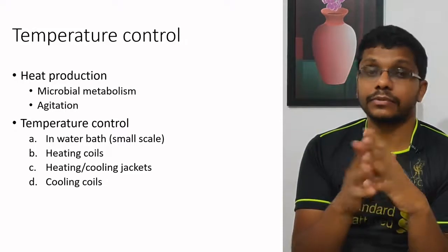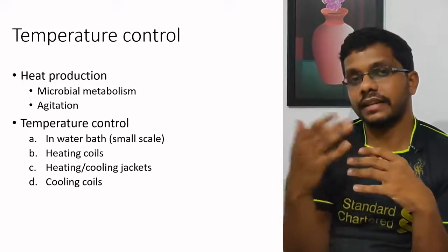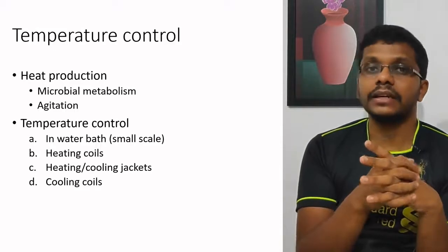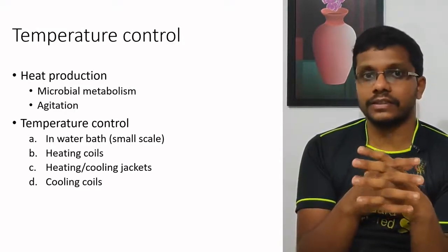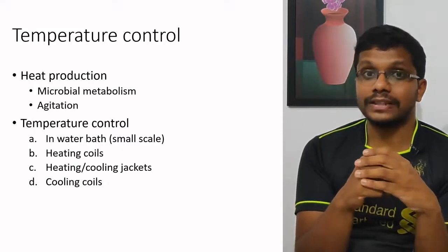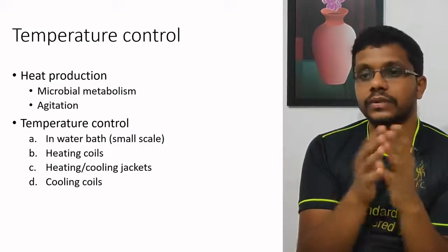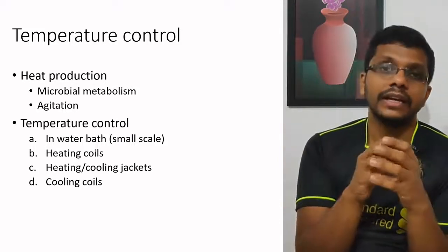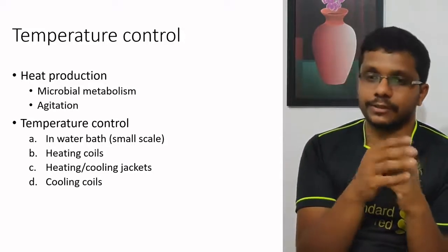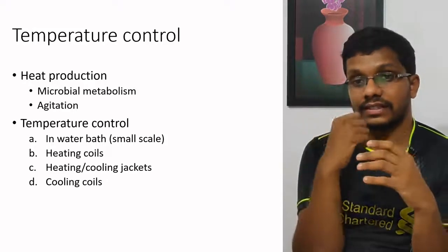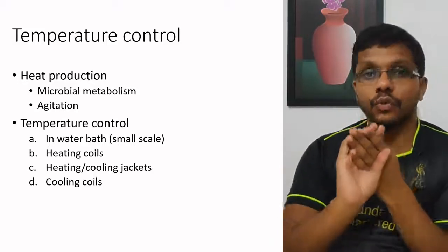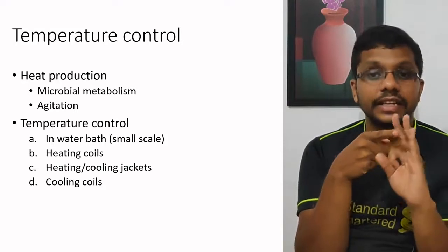The second method is heating coils. At the beginning of fermentation, the microorganism may need a higher temperature than room temperature, so heating coils are inserted into the fermenter to increase temperature. Third, we have heating or cooling jackets — an outer covering of the fermenter through which a coolant passes to aid temperature control. Finally, we have cooling coils, which are similar to heating coils but used to cool down the fermenter. So temperature control can be achieved using these four mechanisms: water bath, heating coils, heating or cooling jackets, and cooling coils.